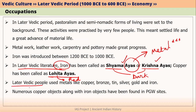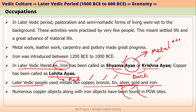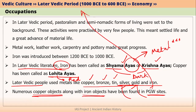Later Vedic people used different metals — copper, bronze, tin, silver, gold, and iron. Particularly, they used Krishnala as well as Satamana. We know about Krishnala and Satamana only from later Vedic literature, as no archaeological evidence has been found for these. However, archaeological evidence of other metals has been found. For example, many copper objects and iron objects have been found from PGW sites, which belong to the later Vedic period.